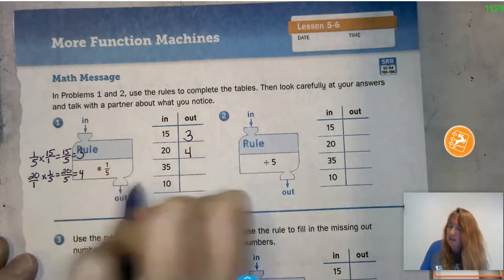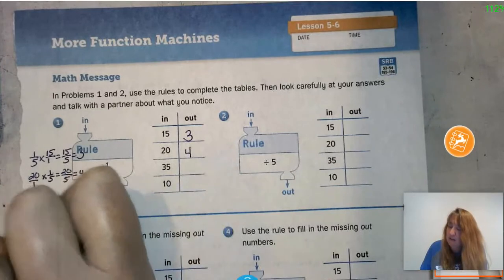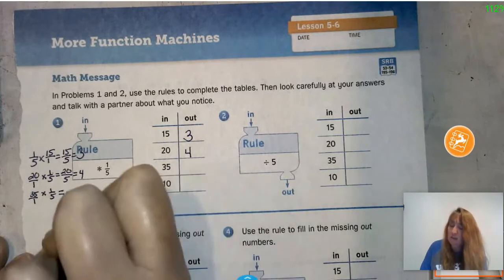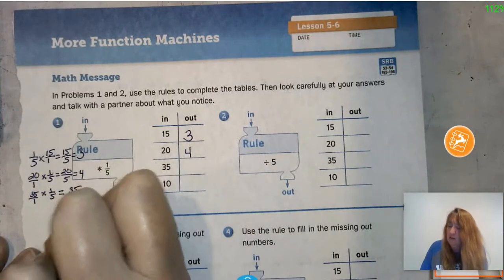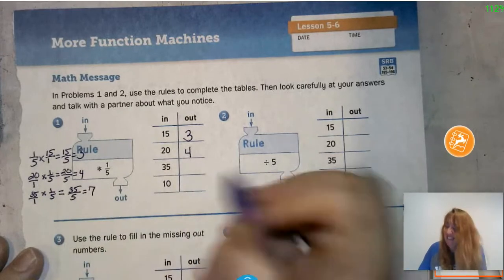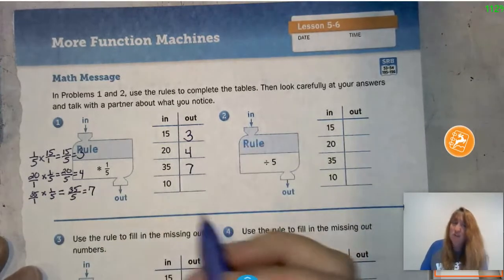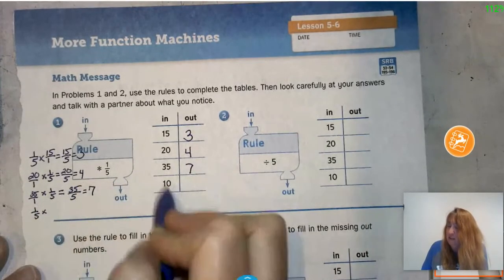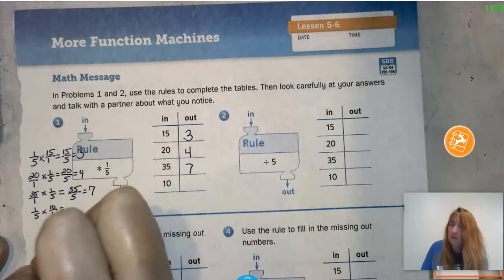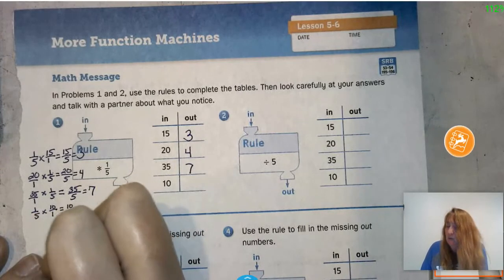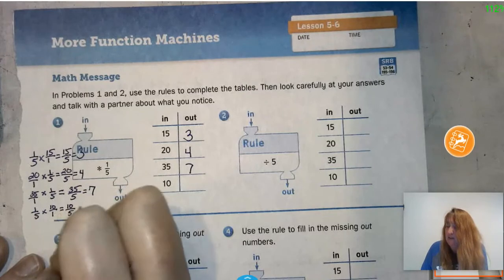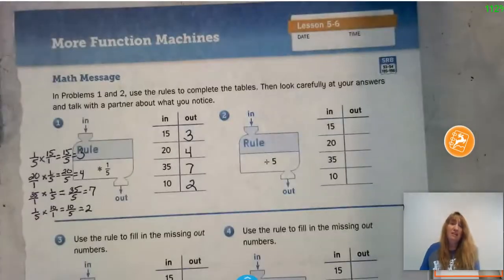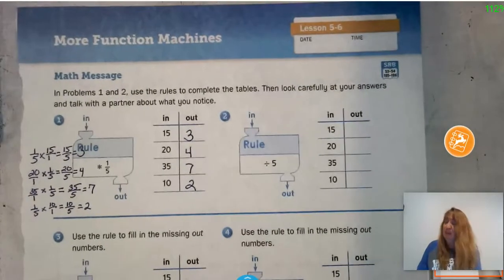Now 35 times 1/5 — I put the 1 underneath, multiply across: 35 over 5, so our answer is 7. And then 1/5 of 10: 1 times 10 is 10, and 5 times 1 is 5, so 10 divided by 5 is 2. We've got all our answers for the first table.